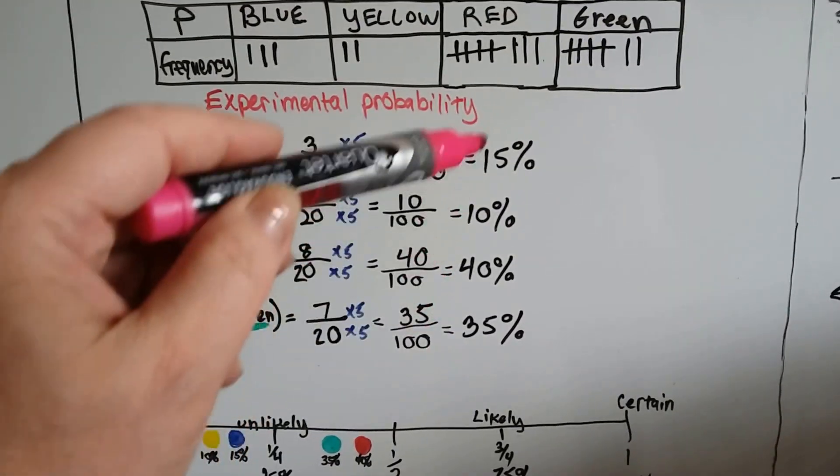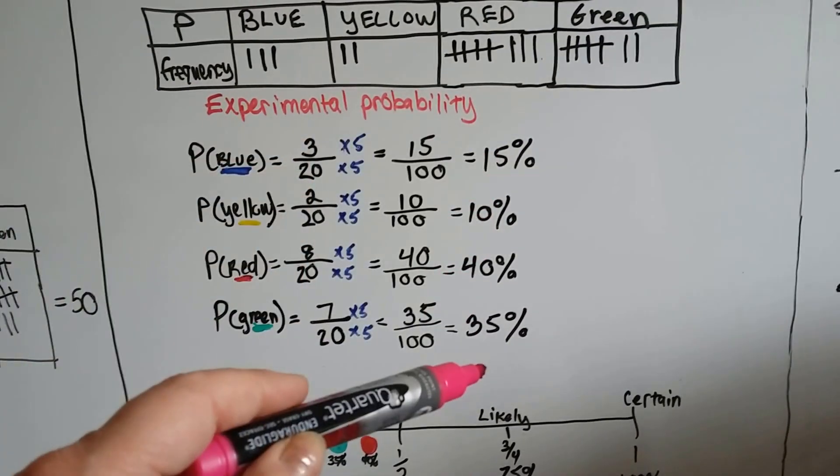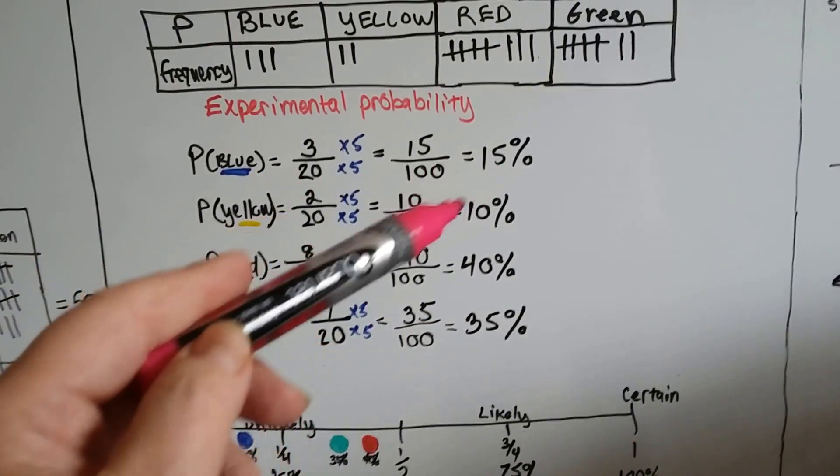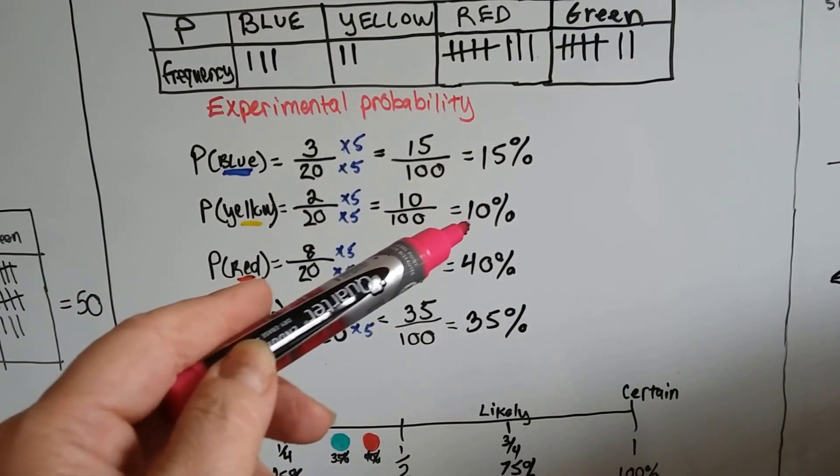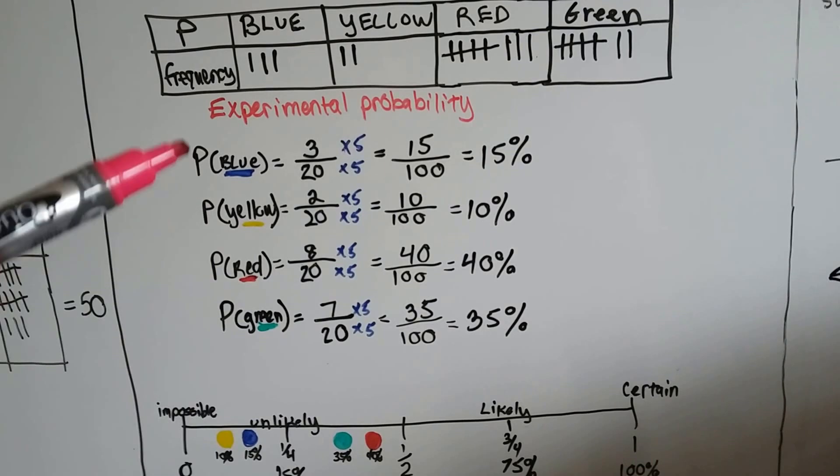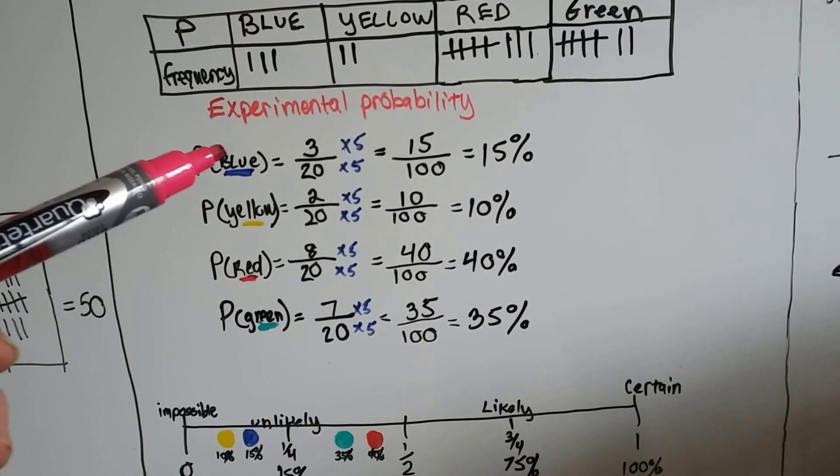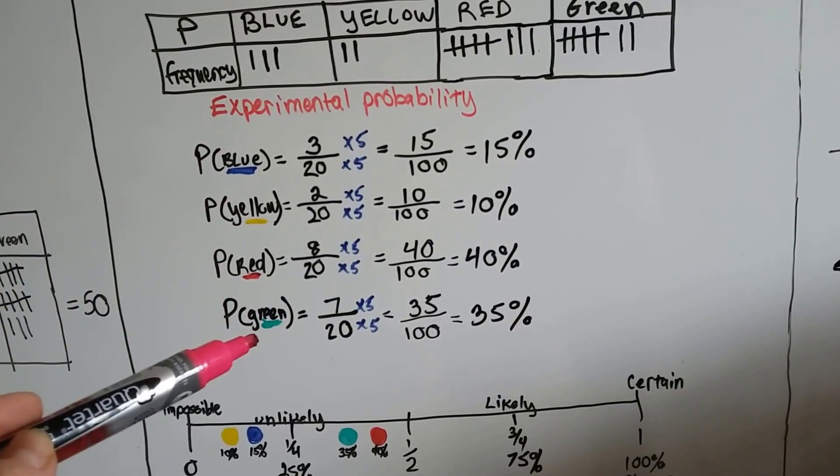Here's the percentage of times out of 100 that they landed on those colors. Blue was 15. Yellow was 10. And see, each of these P's stand for probability, and that's the event. The color is the event.